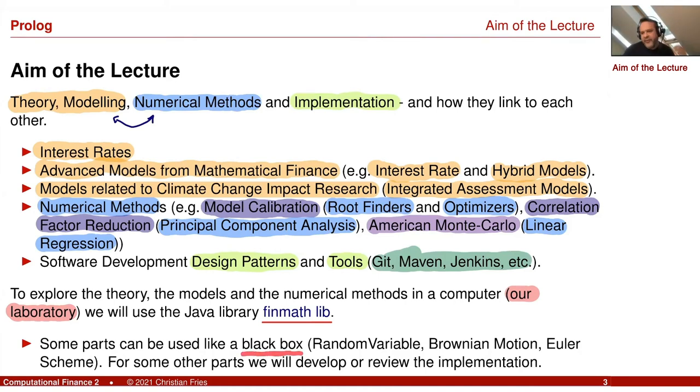Sometimes we will use some parts as a black box. So there are, for example, implementations for a Brownian Motion or an Euler scheme. So we can now just use that. So we do not need to study very hard how that was implemented. And sometimes we will also develop new parts or have you with the implementation.